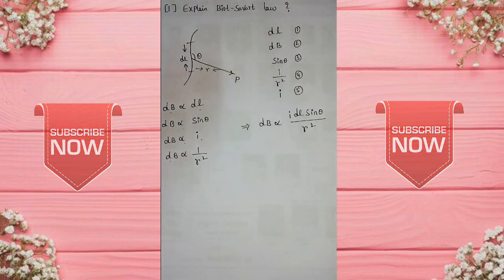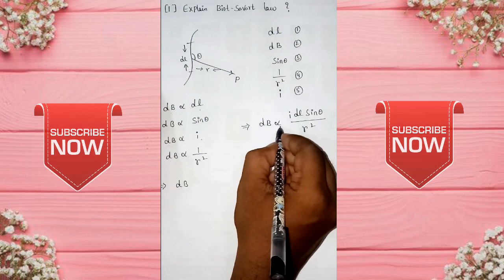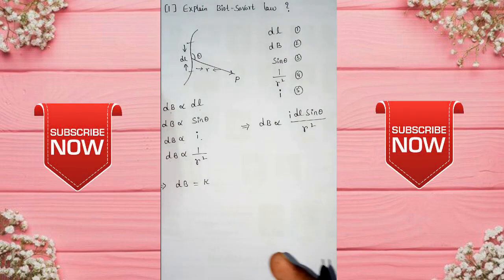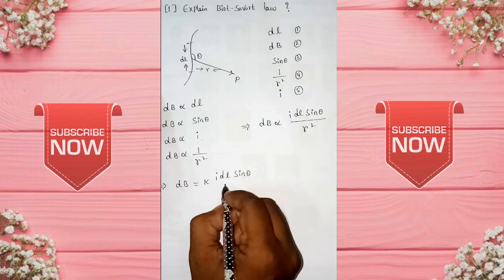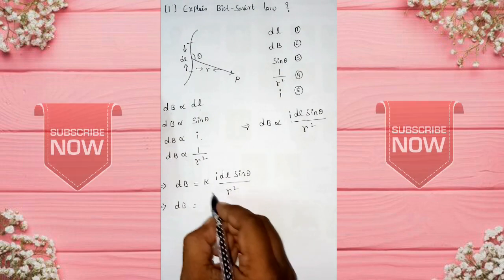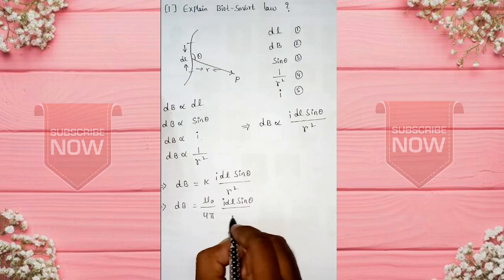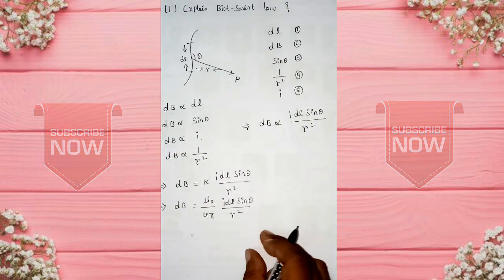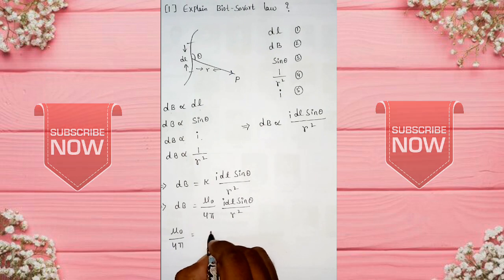This is the same thing. Next, db directly proportional to i dl sin theta by r square. That's why we use k to remove the proportionality constant. We use mu0 by 4 pi, i dL sin theta by r squared. This mu0 by 4 pi is the proportionality constant. Mu0 by 4 pi equals to proportionality constant.